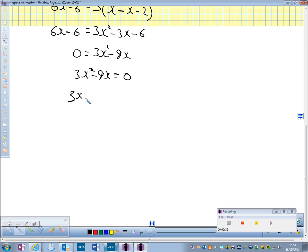We can take out 3x, and we're left with x minus 3 equals 0. That means either 3x equals 0 or x minus 3 equals 0. That means x is 0 or x is 3.